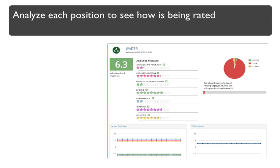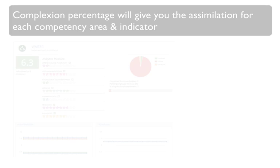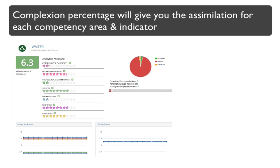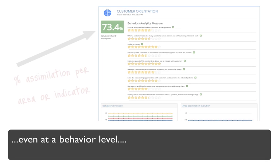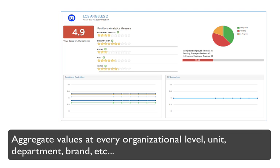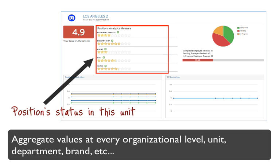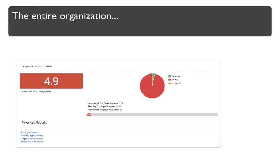Analyze each position to see how it is being rated and its evolution over time. Completion percentage will give you the assimilation for each competency area and indicator, even at a behavior level. Aggregate values at every organizational level — unit, department, brand, etc. Aggregating values and combining them will provide you with information, for example, on the behavior of a given position within a unit or department, even at the highest level within the entire organization.